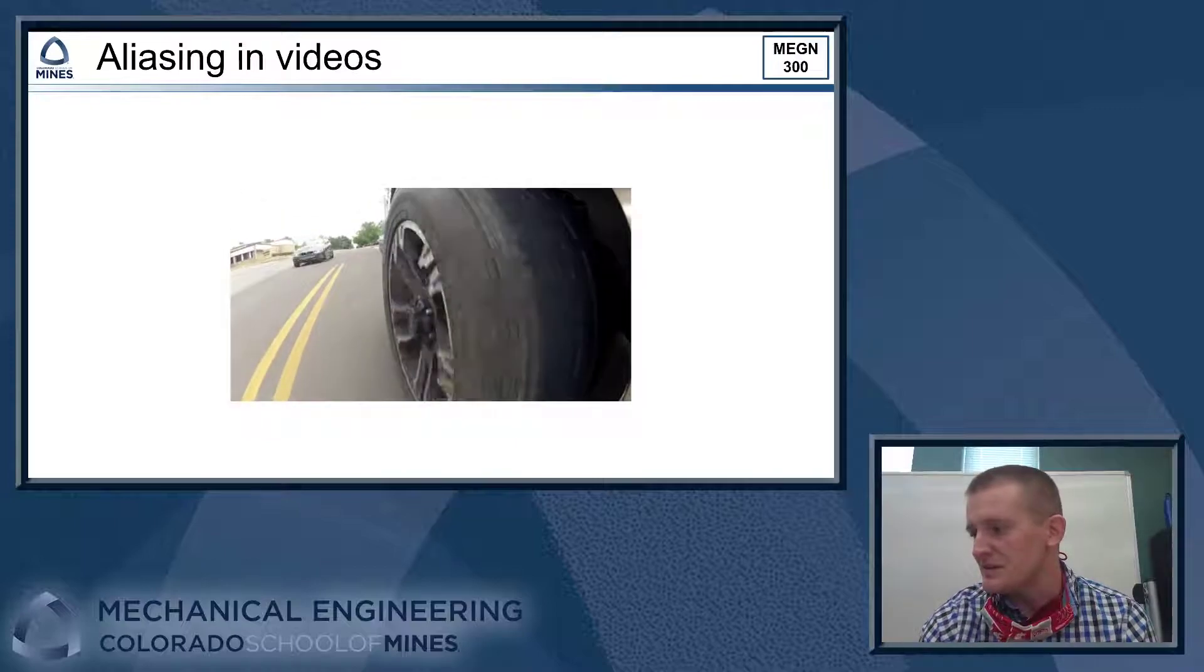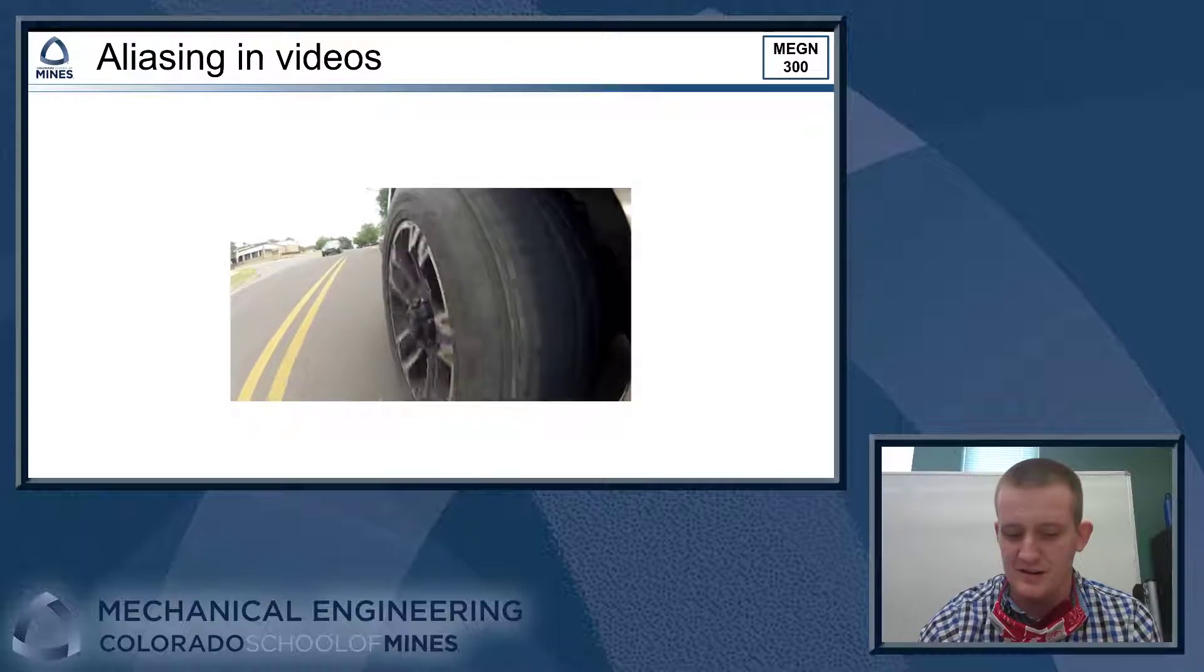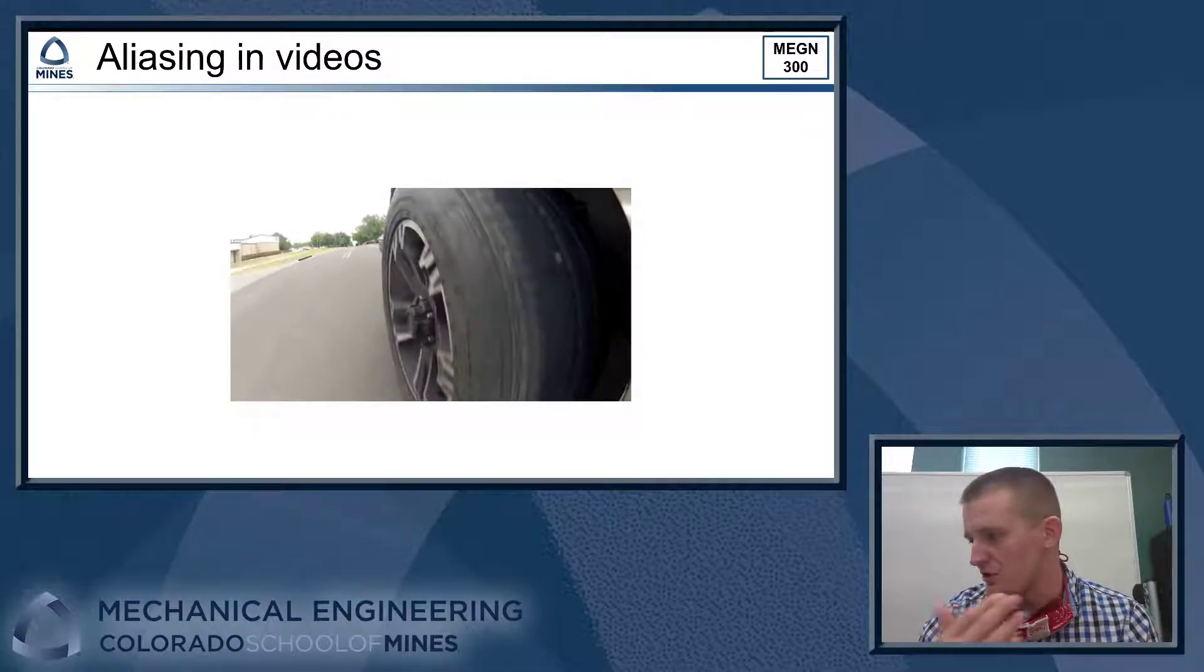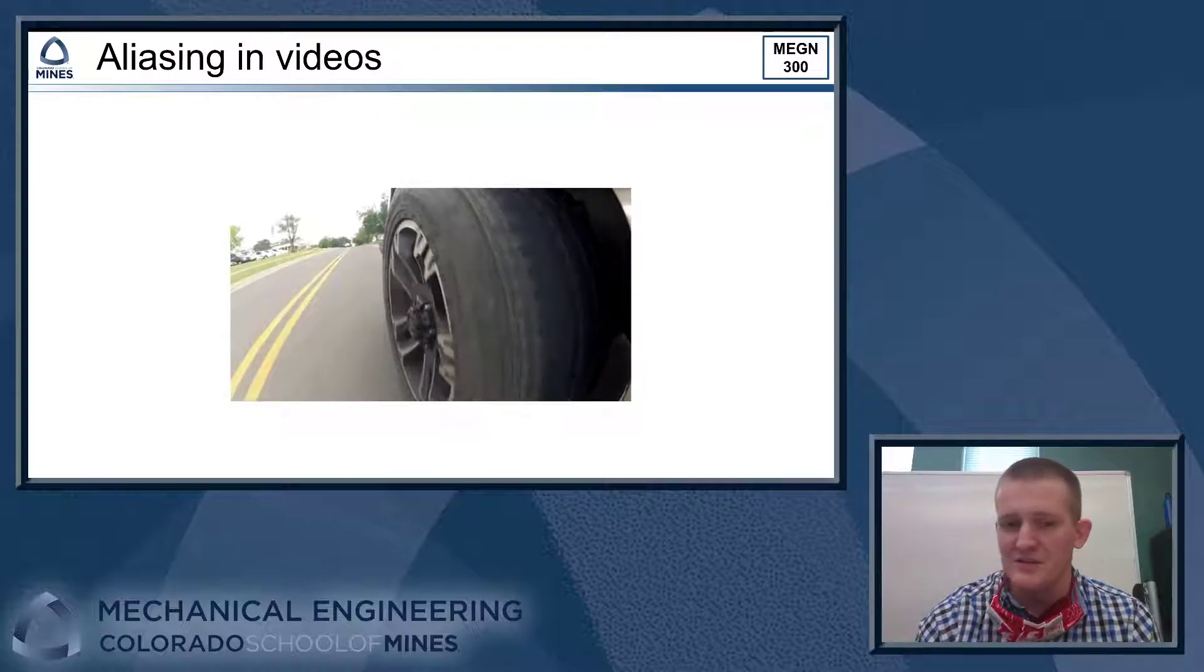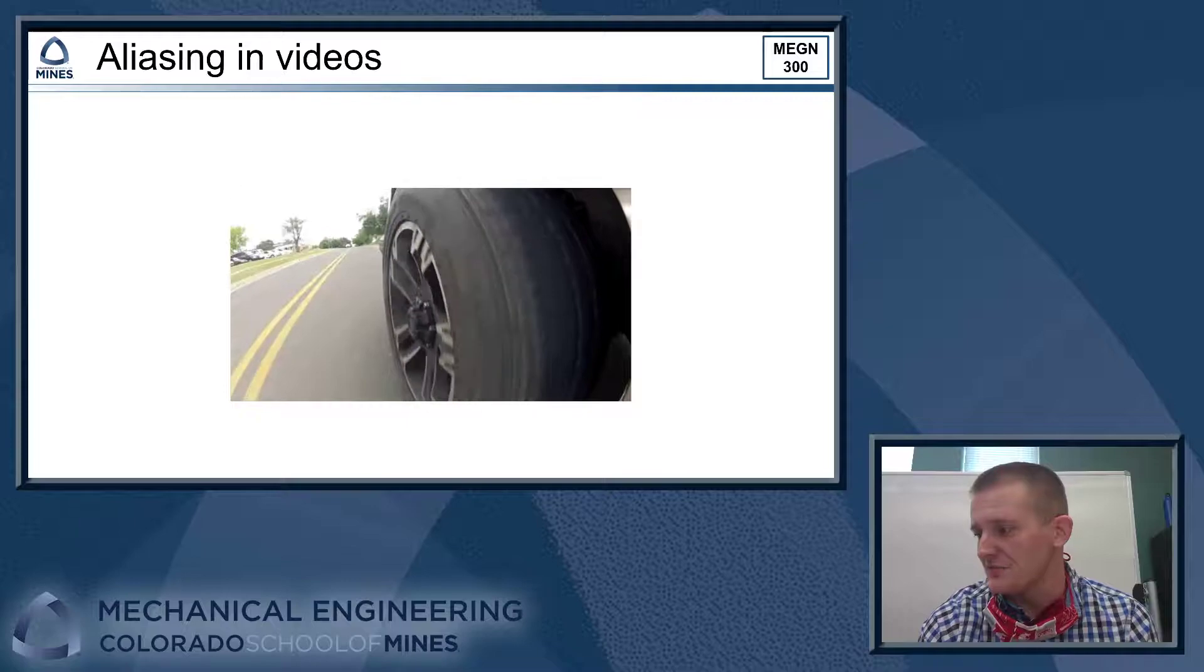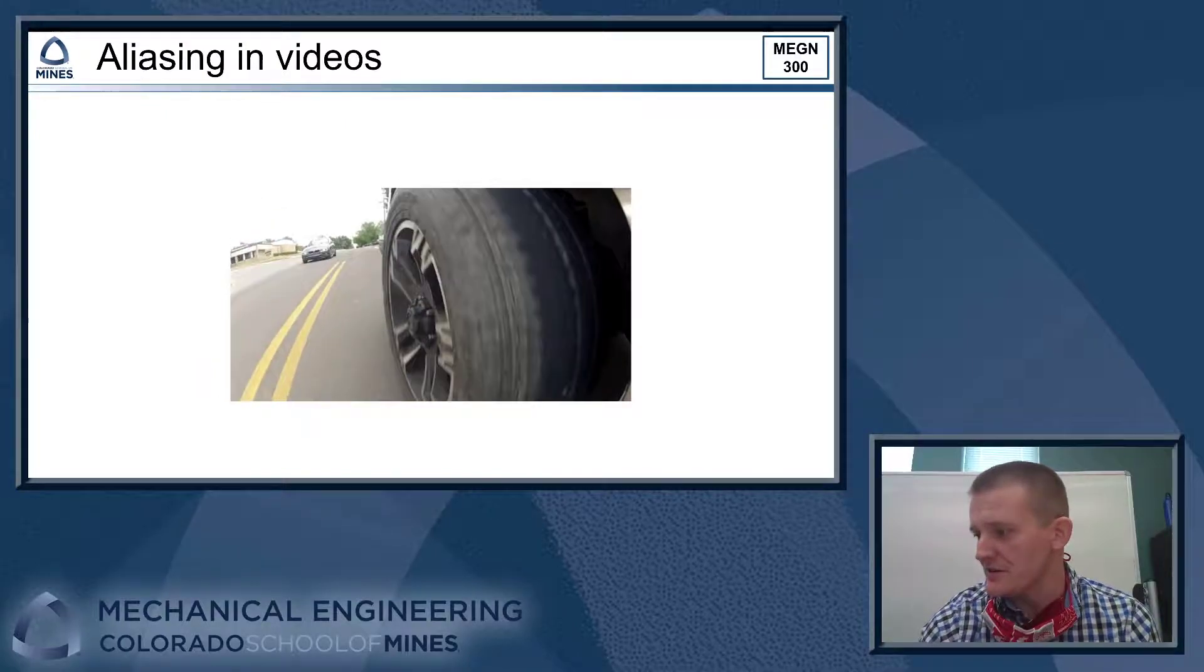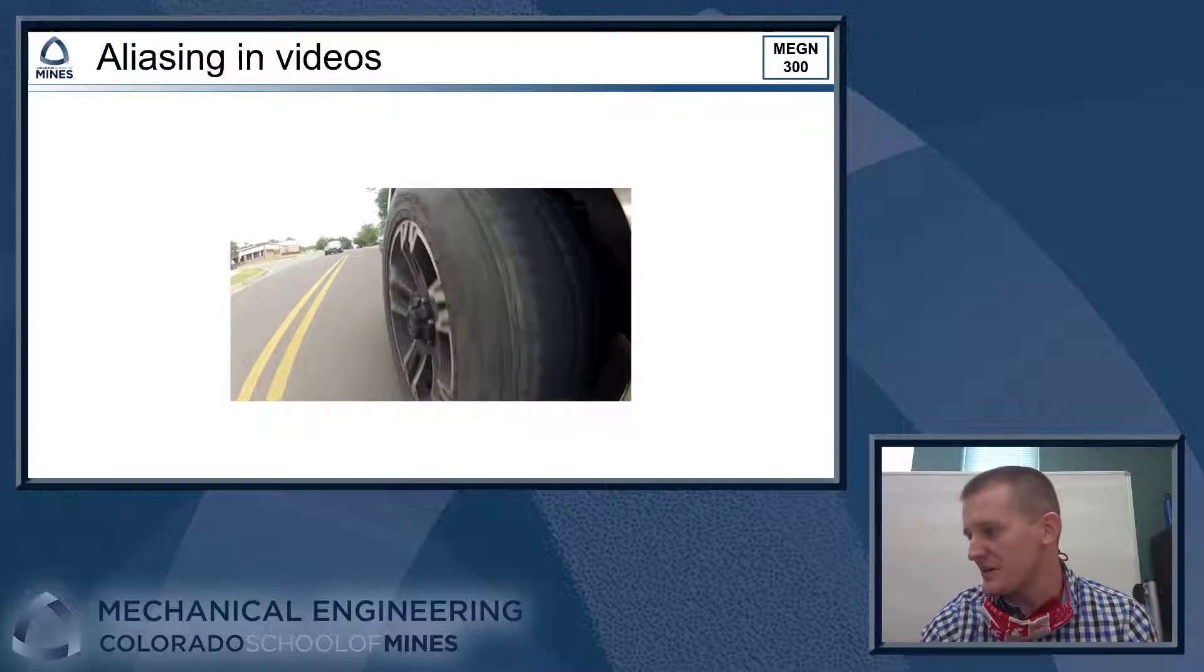One place that you can see this happen fairly noticeably is in video. So the way a video camera works is it's taking still images of the world and stitching them together, and we show them in a rapid sequence, and our brains detect that as motion. So a normal video camera, standard television, would be about 30 hertz, so we're getting 30 frames per second, a little bit fancier cameras a lot of times are going to 60 hertz now, but we still have things out in the world that are faster signals than that.